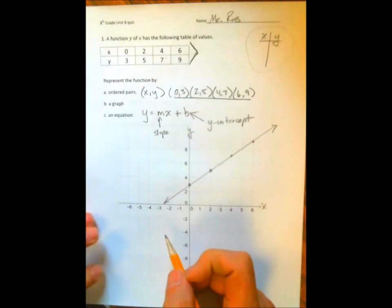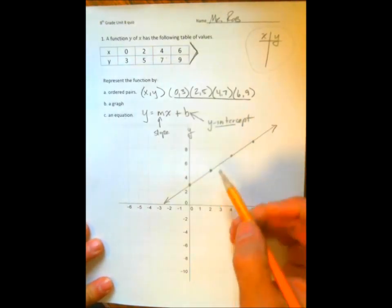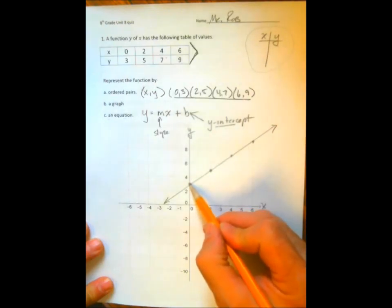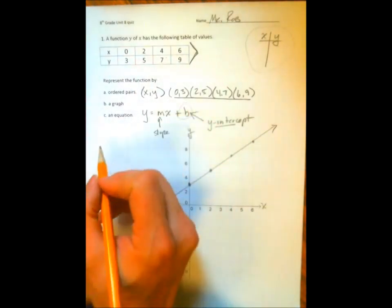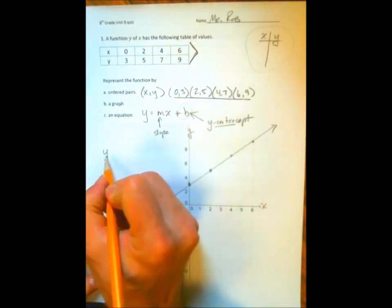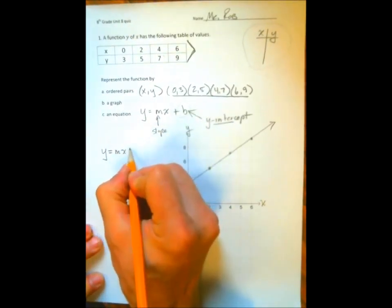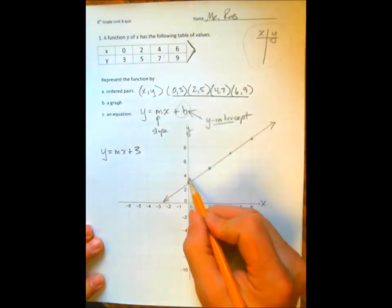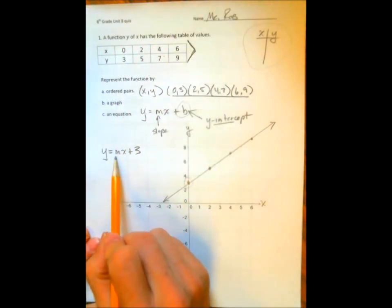Meaning the place where the graph or the function goes through the y-axis. Well, that's pretty easy. It goes through the y-axis at (0,3), so the number 3 goes right here. So we rewrite this equation as y equals mx plus 3, because it goes through the y-axis at 3. Well, what's the slope?